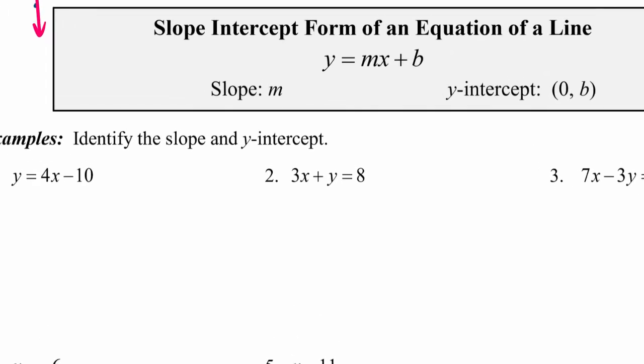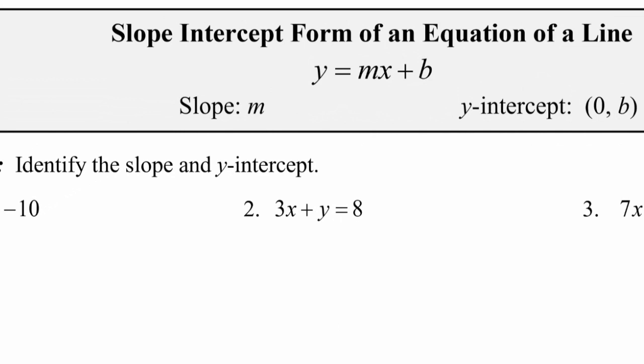So the slope-intercept form is this equation y equals mx plus b, and you've probably heard that used before. Notice some things about it. The equation is solved for y, so y is isolated on one side of the equal sign, and the x term and the constant are on the other side of the equal sign.